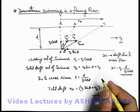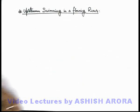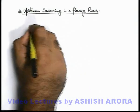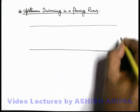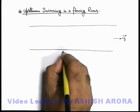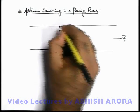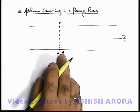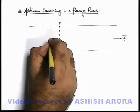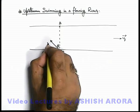Now we'll come to another case: upstream swimming in a flowing river. We have a river flowing at current u_f, with the swimmer at position A on one bank and the directly opposite point on the other bank being B. The swimmer jumps into the river and starts swimming in the upstream direction — opposite to the flow velocity — at an angle theta with velocity v_s.